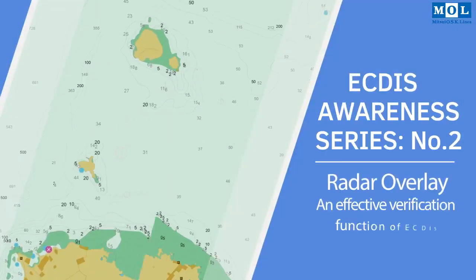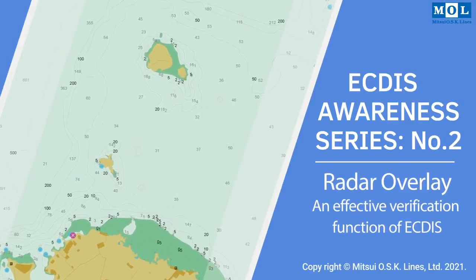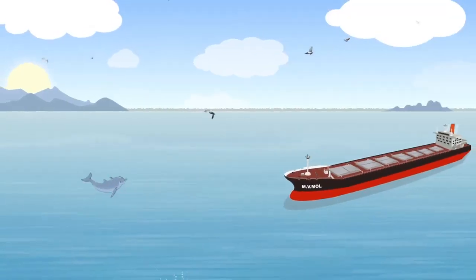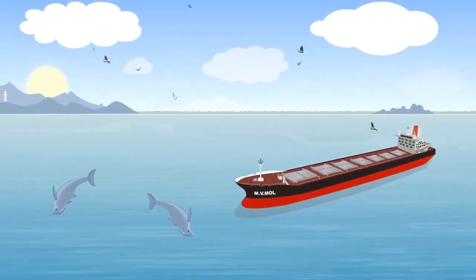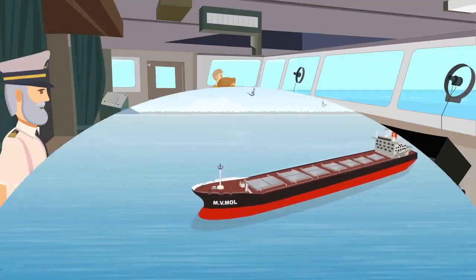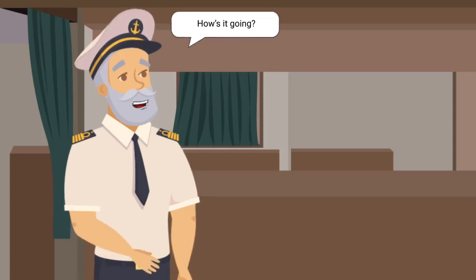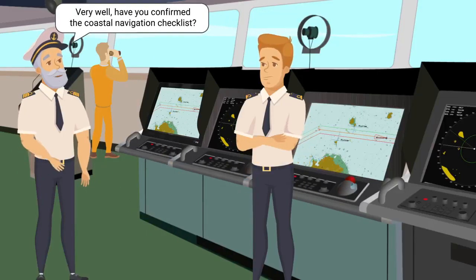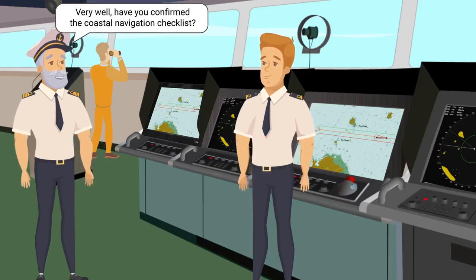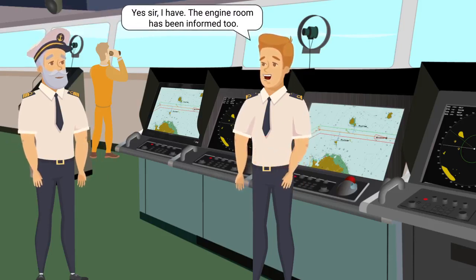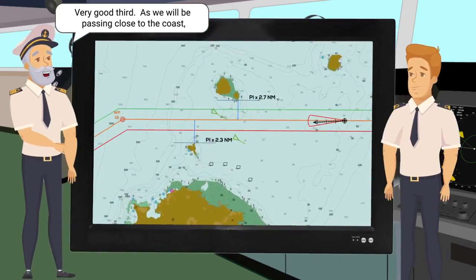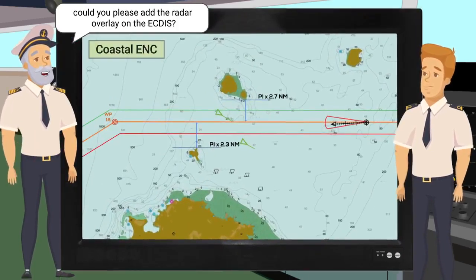ECDIS Awareness Series number two: radar overlay — an effective verification function of ECDIS. Good morning, Third. How's it going? Good morning, sir. All is well. Our coastal passage will start soon. Very well. Have you confirmed the coastal navigation checklist? Yes sir, I have. The engine room has been informed too. Very good. Third, as we will be passing close to the coast, could you please add the radar overlay on the ECDIS?